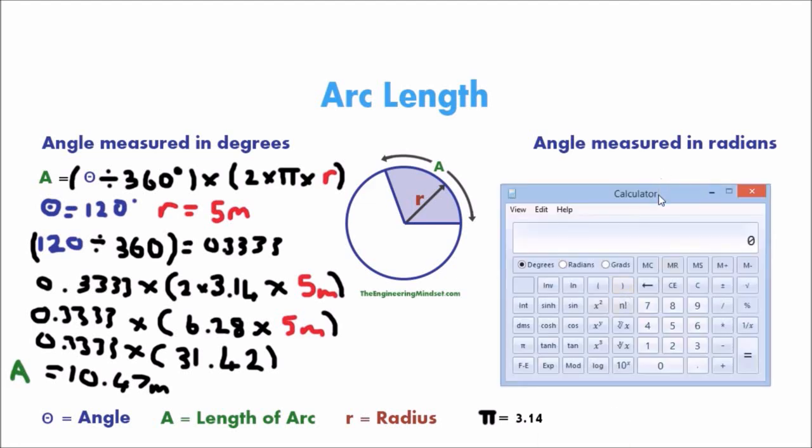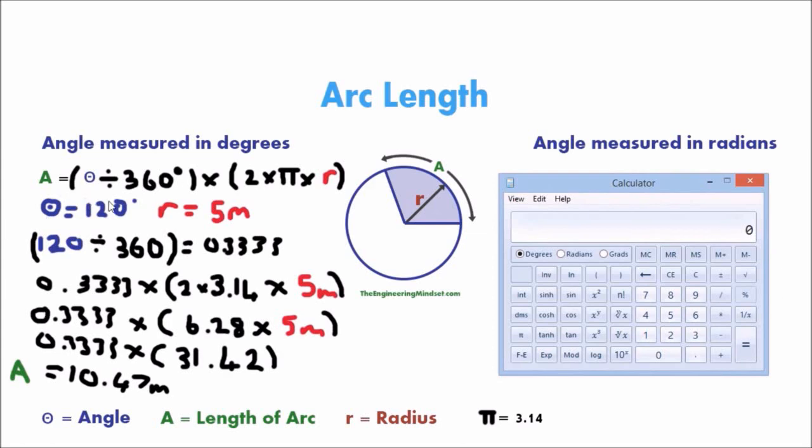And I'll do an example on the calculator as well. So we had 120 divided by 360 equals 0.3333, very precise number here. We only did it to four decimal places, but this is much easier on the calculator. So we're going to have that number times bracket 2 times pi times 5 meters, bracket, equals 10.47, but we'll trim it down to two decimal places.